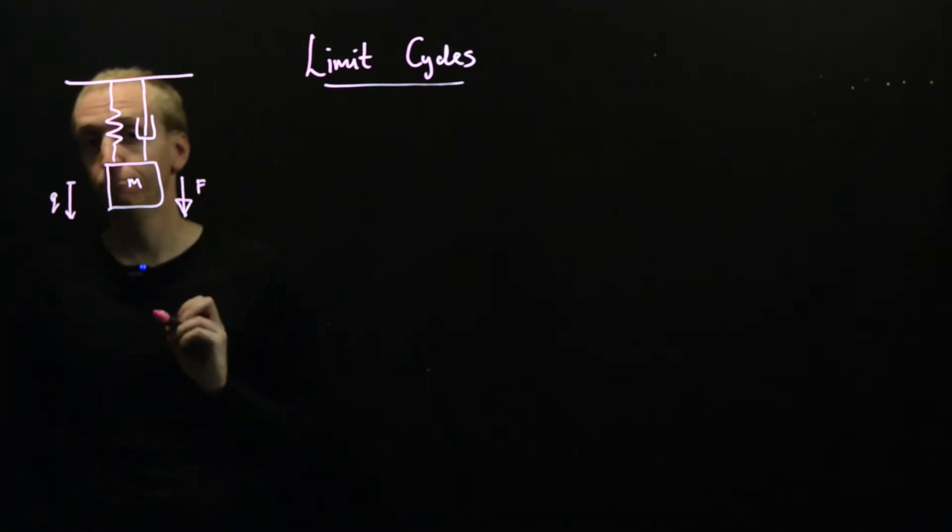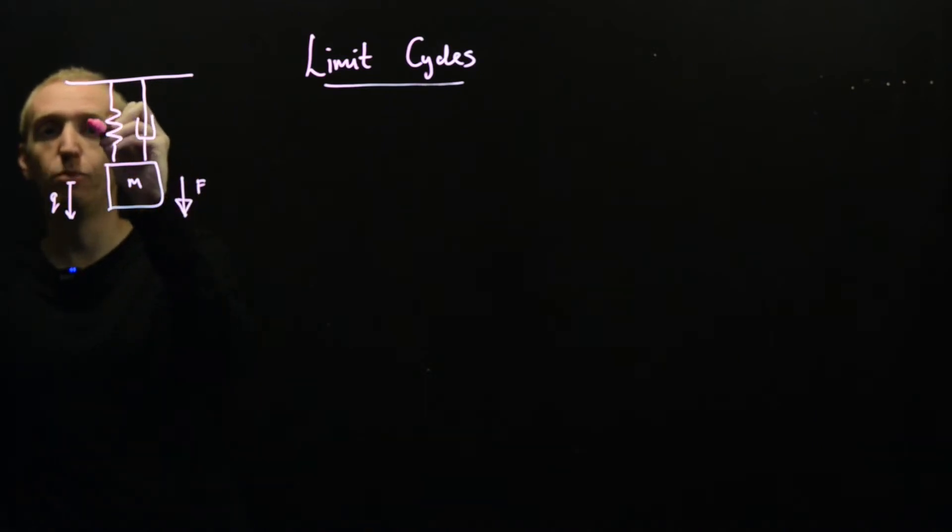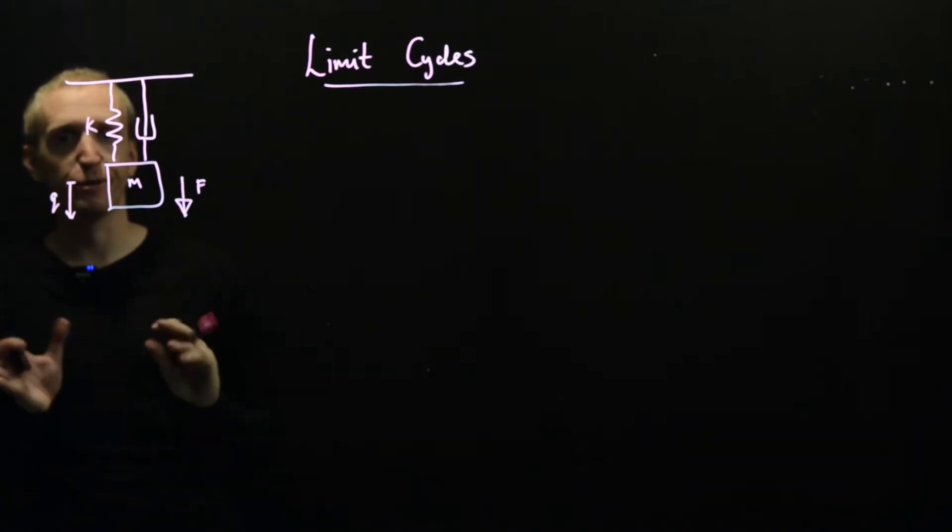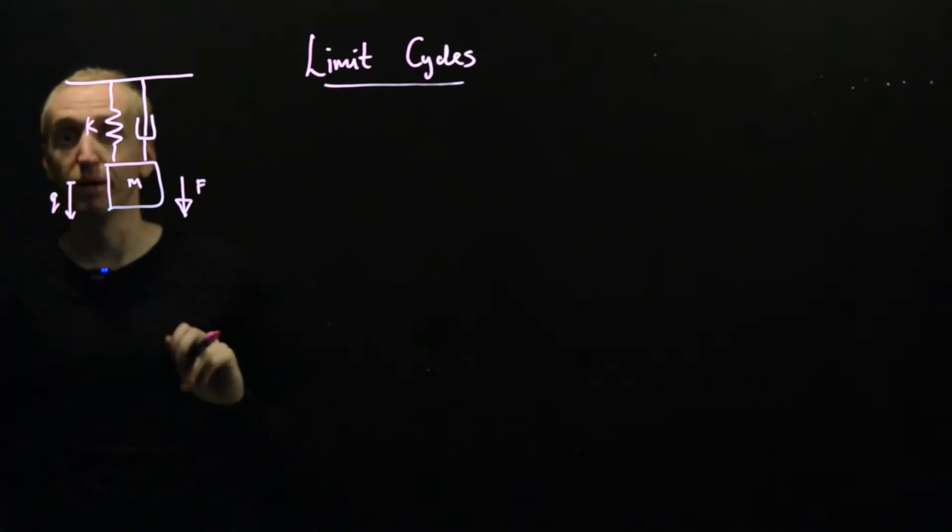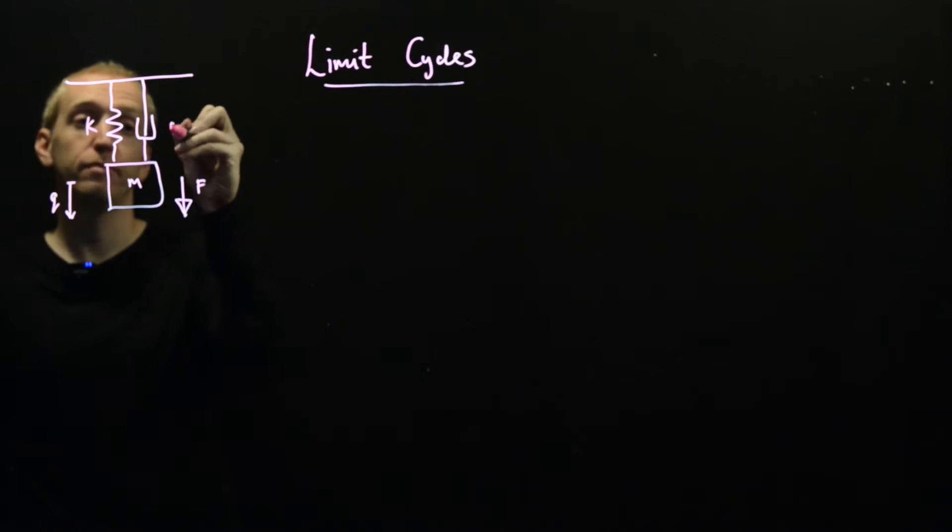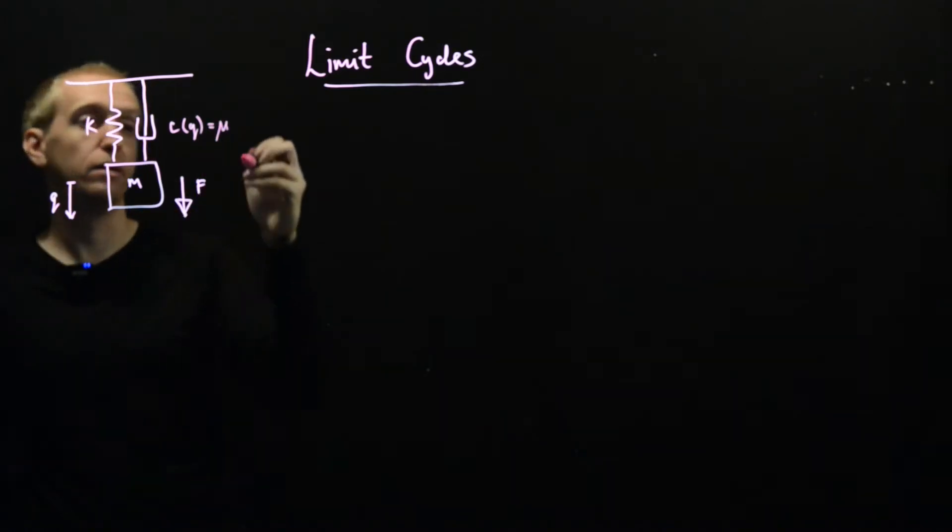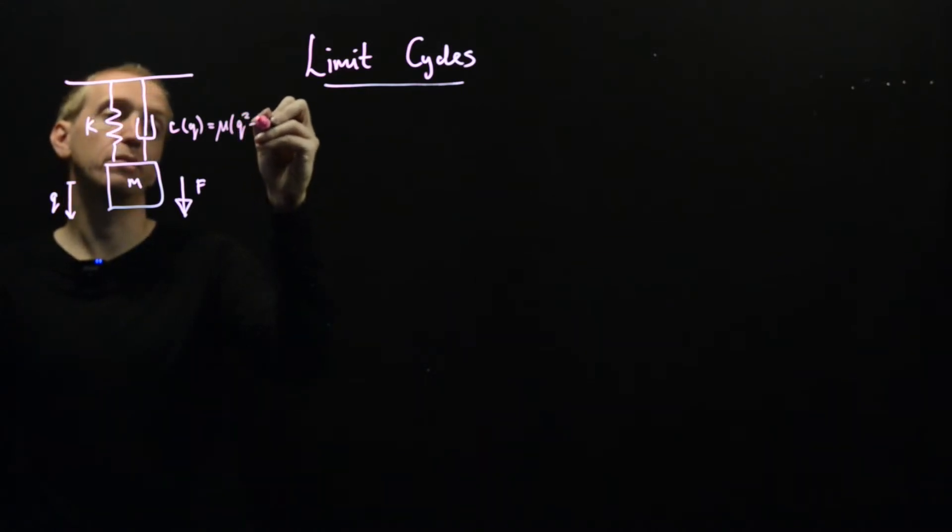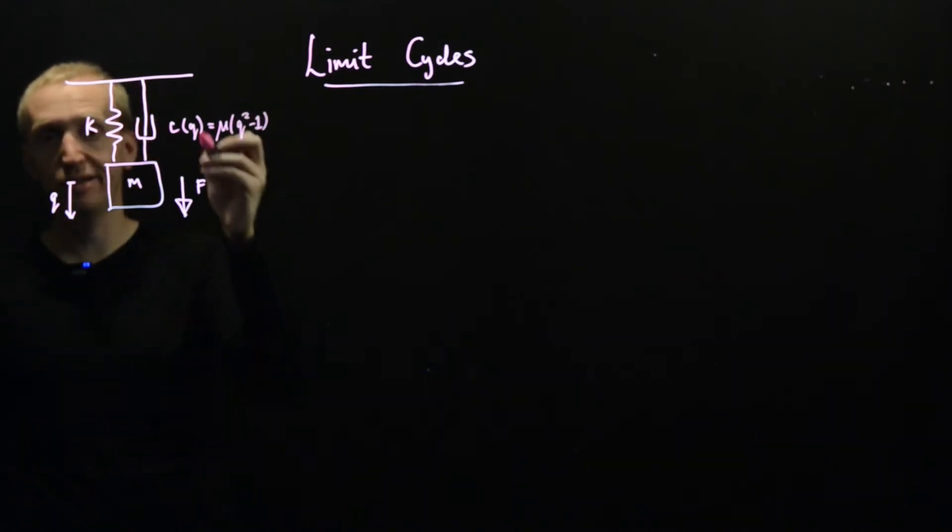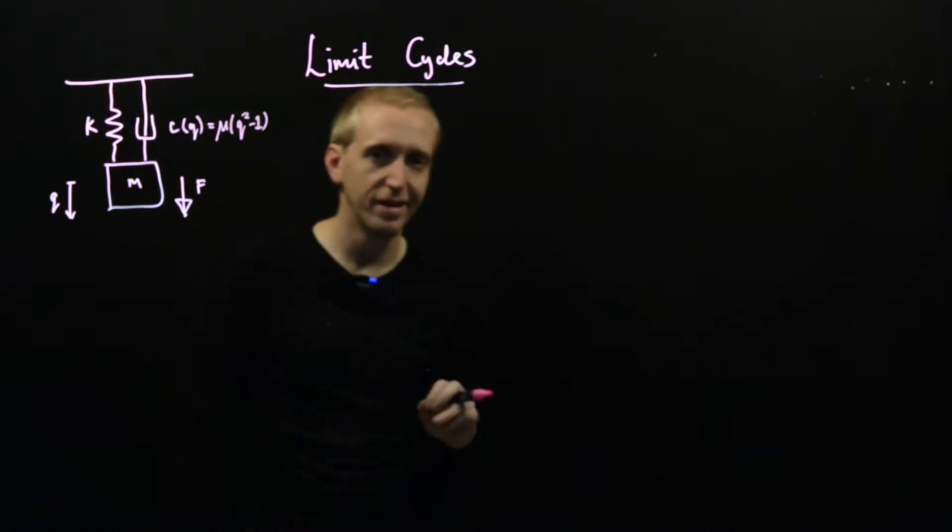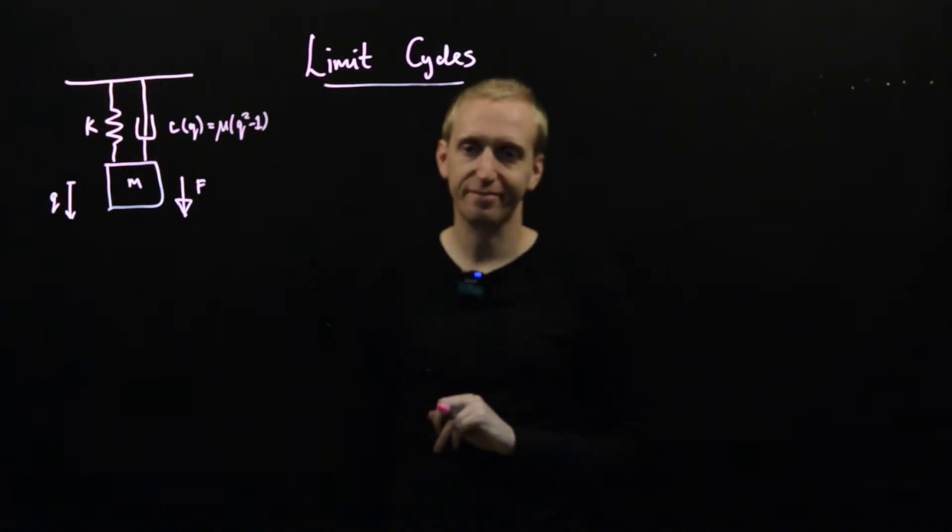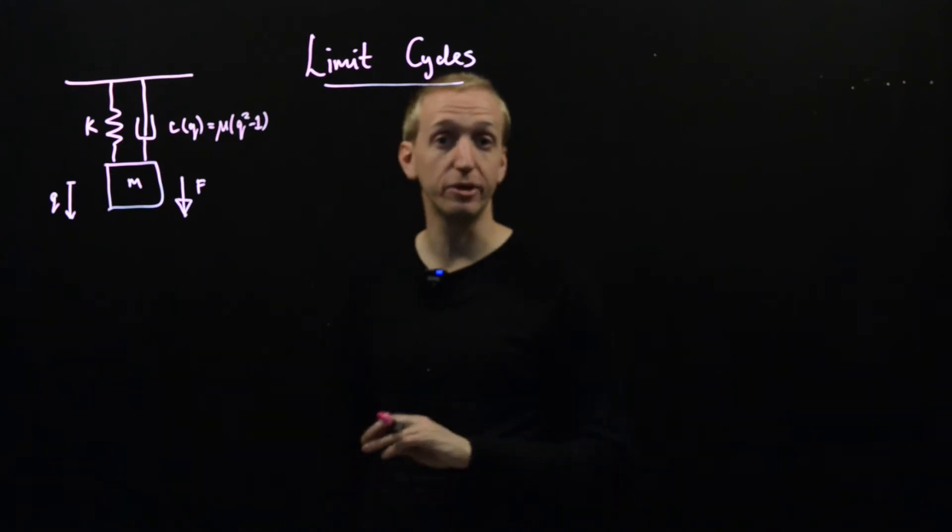So the mass has just got mass m, we're going to have a normal Hookian spring with a stiffness k, but we're going to have a kind of a weird damper. Our damper, its damping coefficient is going to depend on the value of q, and in particular the relationship is going to be given by mu q squared minus 1. So we have this weird non-linear damper, we're not going to worry if such a thing is even realistic.